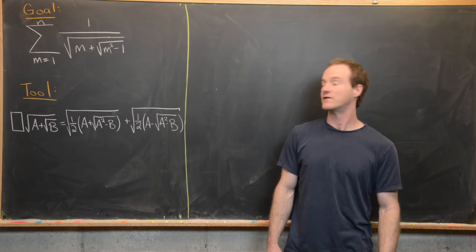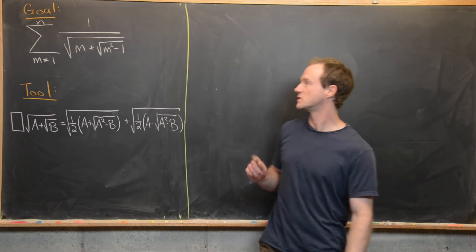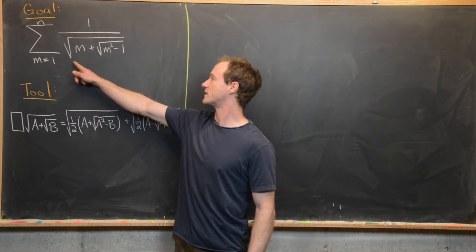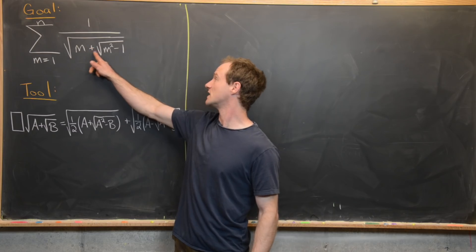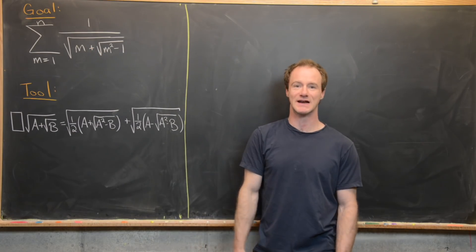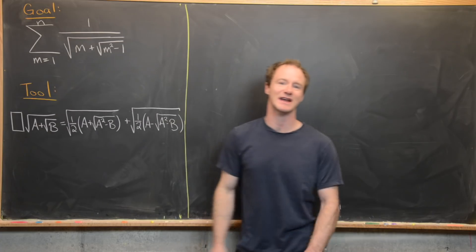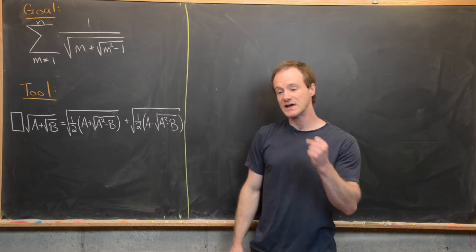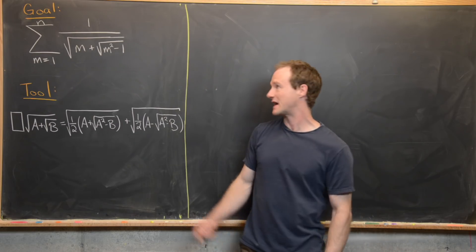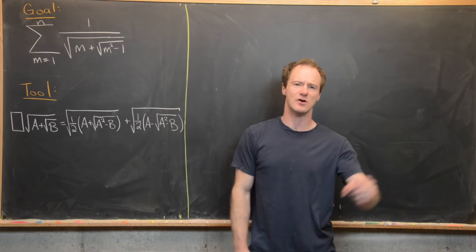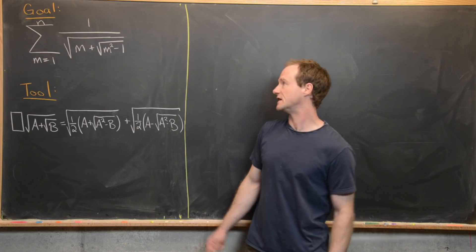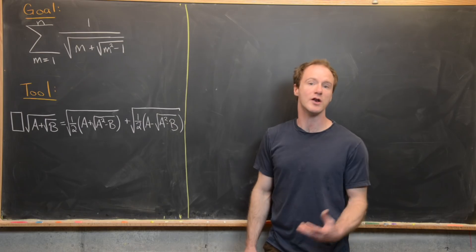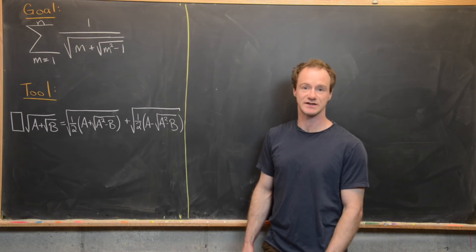Here we're going to look at a finite sum involving a nested radical. We want to look at the sum as m goes from 1 to n of 1 over the square root of m plus the square root of m squared minus 1. You might ask why we're just looking at a finite sum and not an infinite sum. As you'll see, this sum will diverge, and we'll show that by calculating the nth partial sum and noticing the limit goes to infinity. You could also do a p-series test, comparing this to 1 over the square root of m, which is a known divergent series.